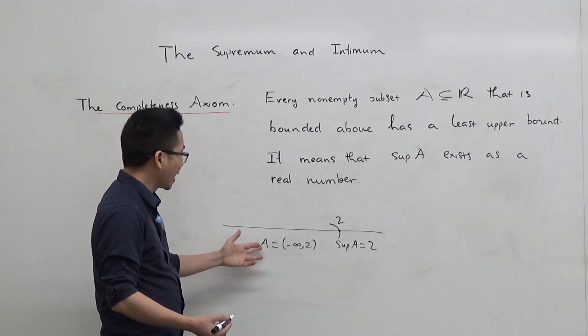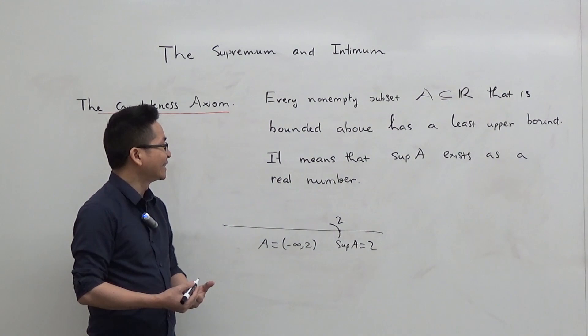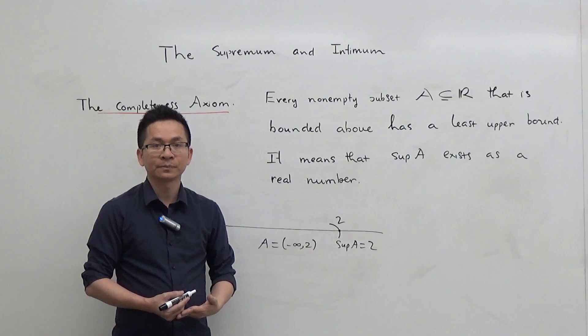In this example, A is the interval minus infinity to 2. Observe that A is non-empty and it is also bounded above. So by the completeness axiom, A has a least upper bound, or the supremum. And in fact, the supremum of A in this example is 2.